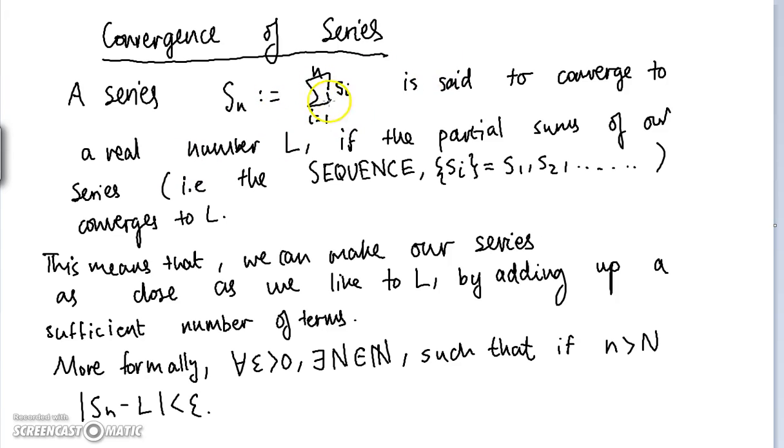Now a series is basically just a large sum of many, many terms, and what we're concerned with is infinite series that go on forever. For example, an infinite series I'm just going to write in red is this one: one plus a half plus a quarter plus an eighth, and you just keep adding these numbers together. In fact, this series converges to two.